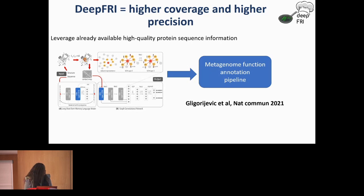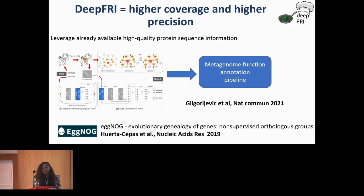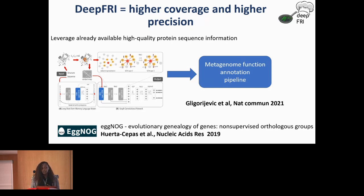For each protein, the method outputs Gene Ontology probabilities. I'm also comparing DeepFRY to the widely used method EggNOG. EggNOG is based on evolution — the principle that within an orthologous group, function is conserved. I'm trying to compare these two methods and see how much we can derive from them.